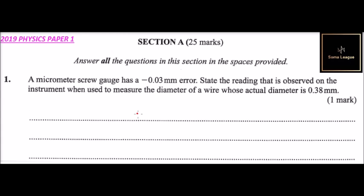So if the actual diameter is 0.38 millimeters, and we are told the micrometer screw gauge has an error of -0.03, it means it will read a value that is raised by 0.03, so we subtract 0.03.